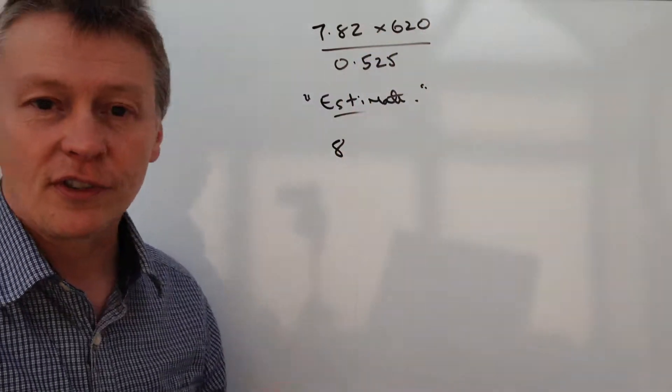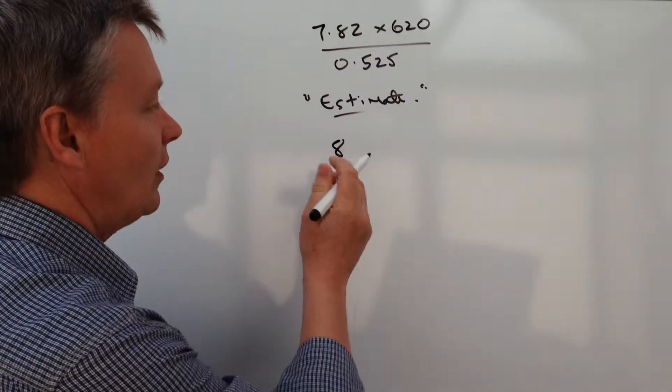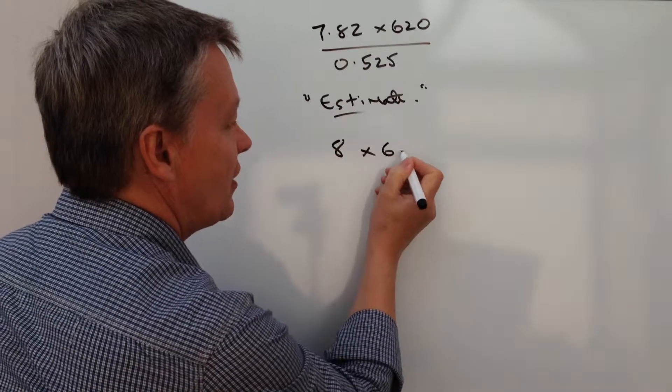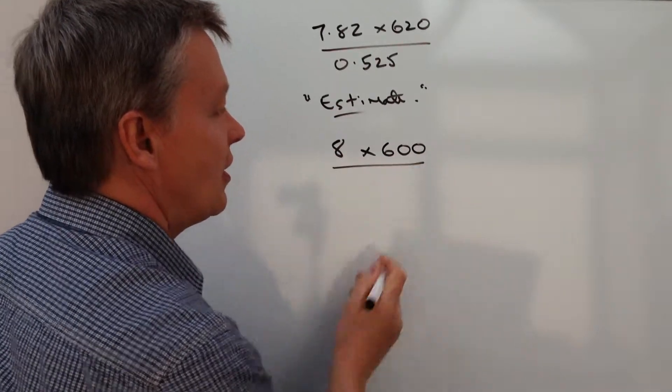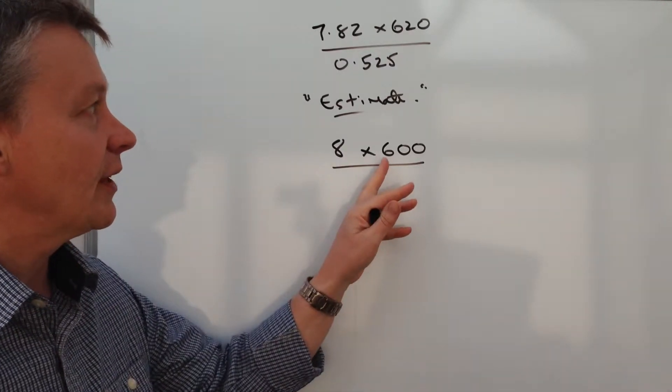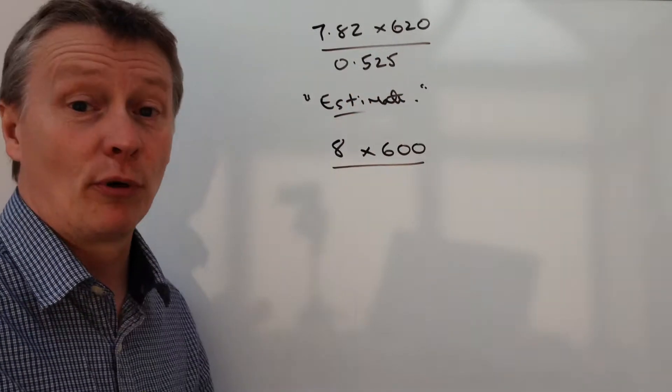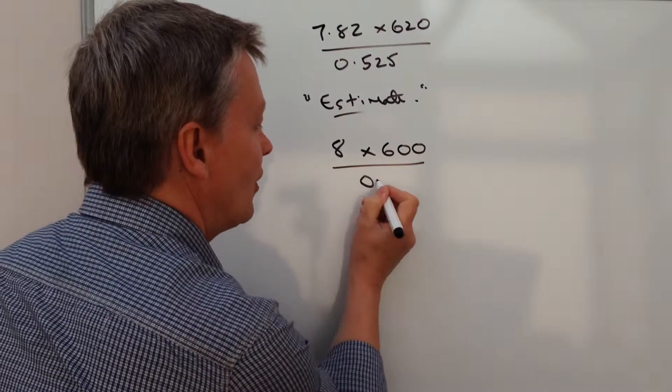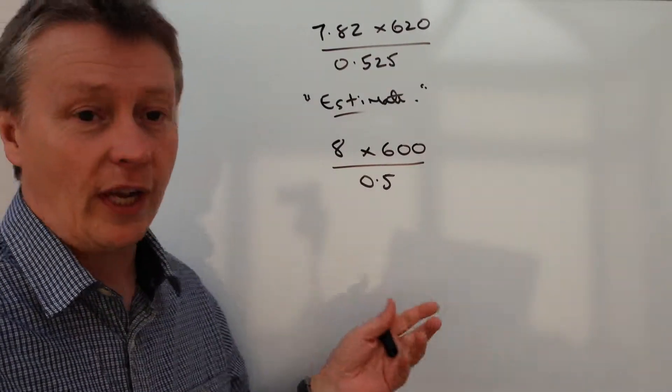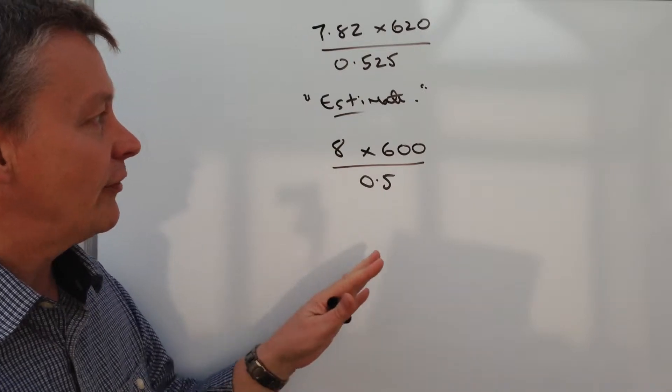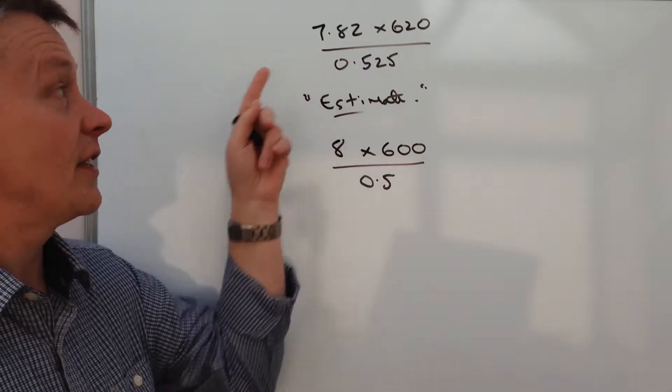This here, 620, well it's probably just as easy to round it to 600, again to one significant figure. And the bottom, I guess, to 0.5. What this will do is give you a very quick and relatively straightforward estimation of this calculation.